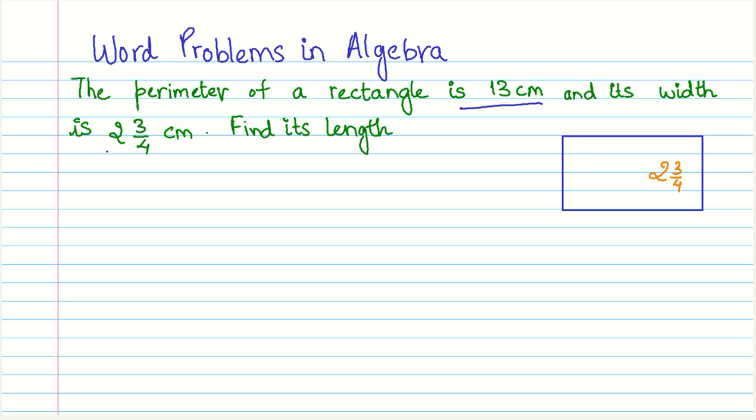Now, first thing, if you recollect, this is a mixed fraction. That is, you have a whole and a part. And when you simplify, this will form something that is known as improper fraction, as you will see. So, but let's come to the problem. Now, it says find its length.